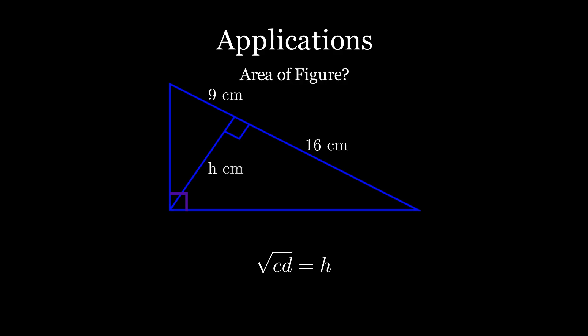Well, this is very easy. Just use the Geometric Mean Theorem to calculate the altitude h. 9 times 16 is 144. The square root of 144 is just 12.